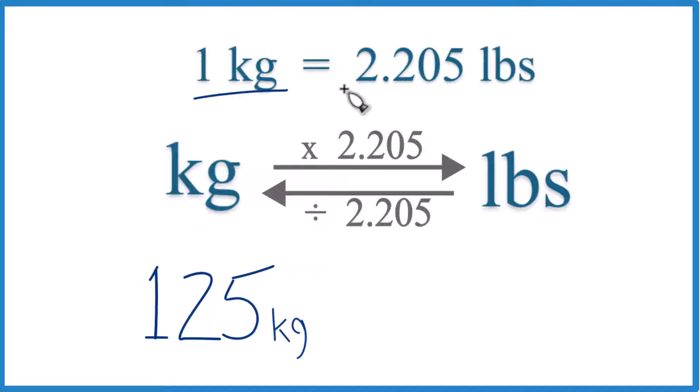One kilogram equals 2.205 pounds. We call this a conversion factor. You need it when you convert from kilograms to pounds or pounds to kilograms.